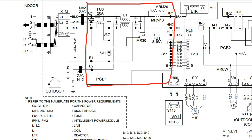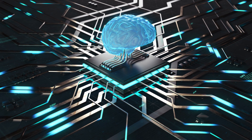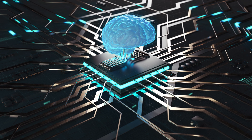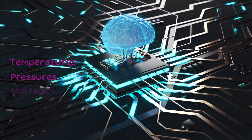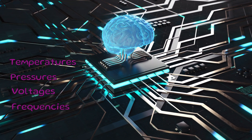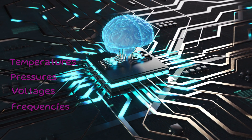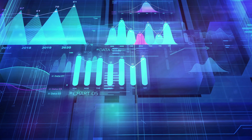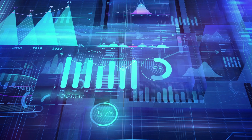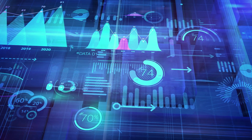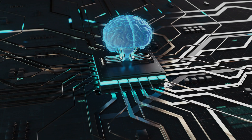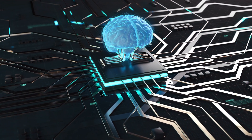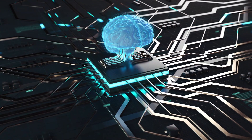Basically, this board constantly receives input signals from throughout the entire system — temperatures, pressures, voltages, frequencies. It's a constant monitoring of the entire system through all these sensors, and this is a constant feedback loop. The PCB, or printed circuit board, receives all this data, crunches it through an algorithm over and over again, and then produces output signals or commands that tell the major components in the system what to do.